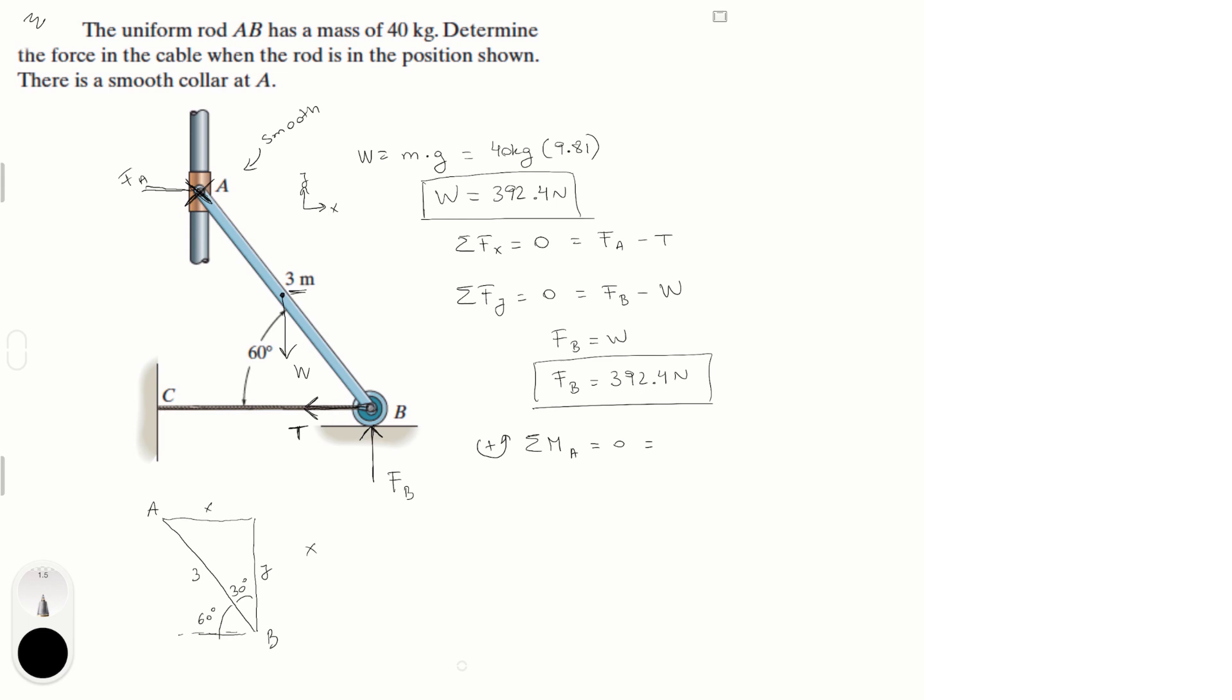So X is equal to 3 sin of 30 which is 1.5, and Y is equal to 3 cos of 30 which is 2.6.